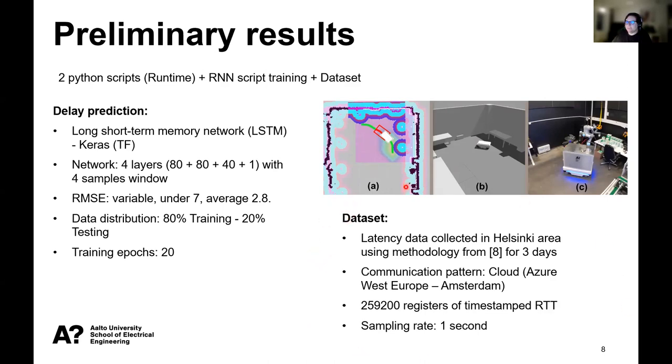To predict the delays, we use a dataset based on the RTT, the round-trip time, capturing between Helsinki and Sur-Amsterdam with a sampling rate of one second. We feed it to a recurrent neural network, and we use 80% for training, 20% for testing, 20 training epochs.